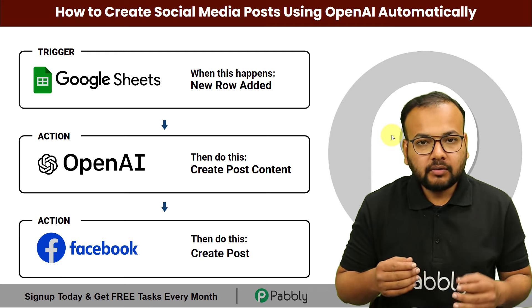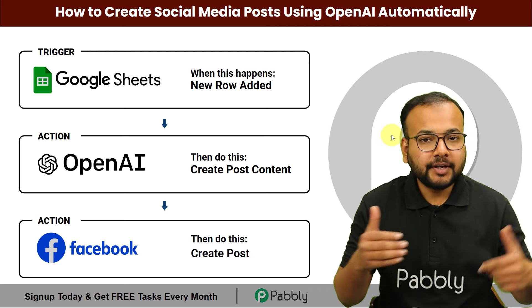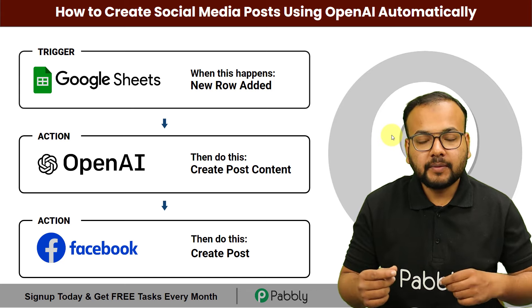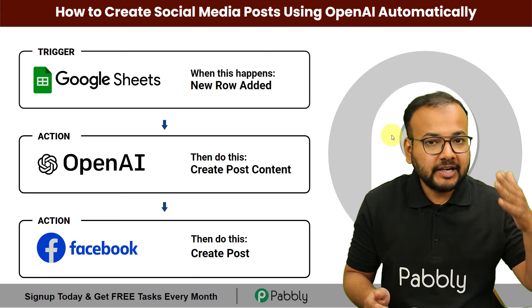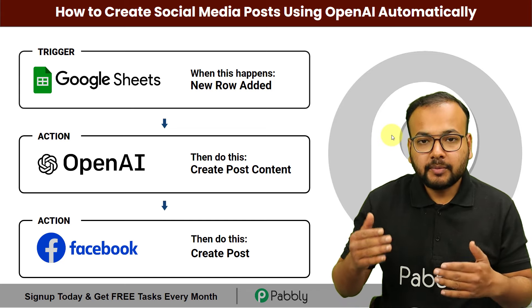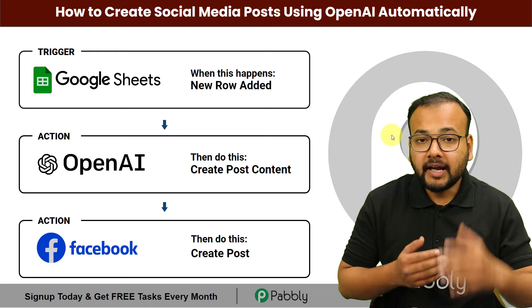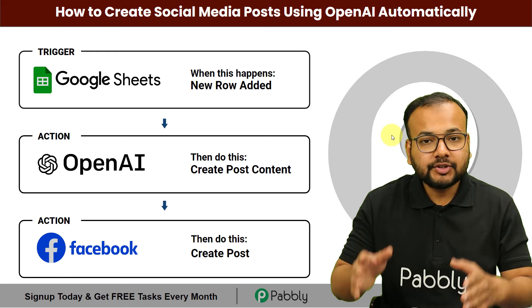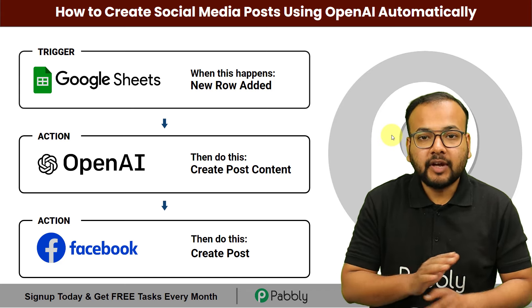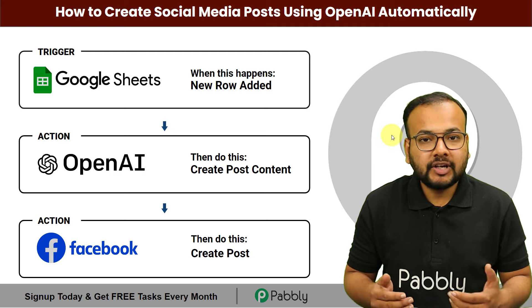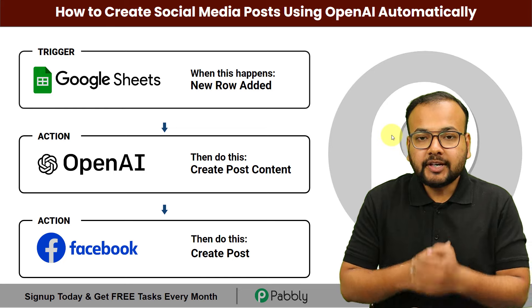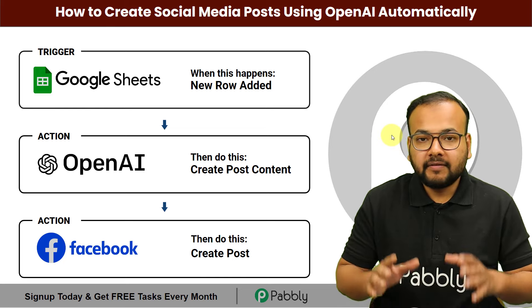We are going to connect a few applications and set up an automation by which you just have to enter the details of the post you want to create in a spreadsheet like Google Sheets. After that, the content of the social media post will be automatically generated and posted on your social media platforms like Facebook. You don't have to do anything manually, it will save you a ton of time and boost your online presence. We are going to set up this without any coding, very easily.